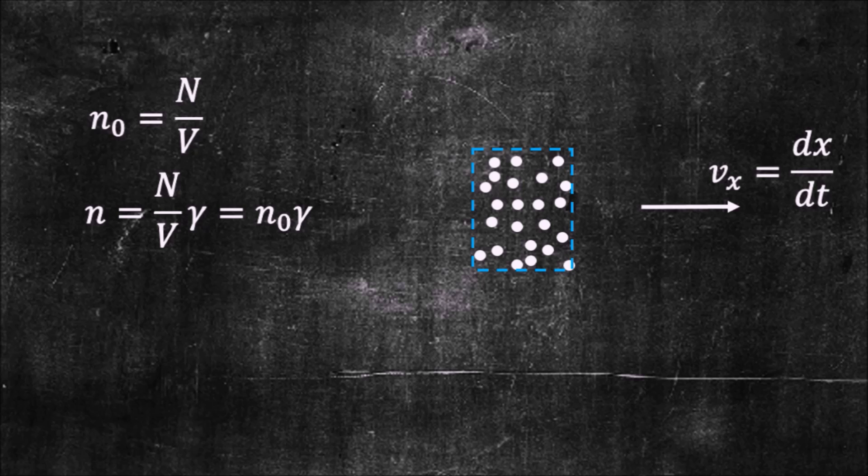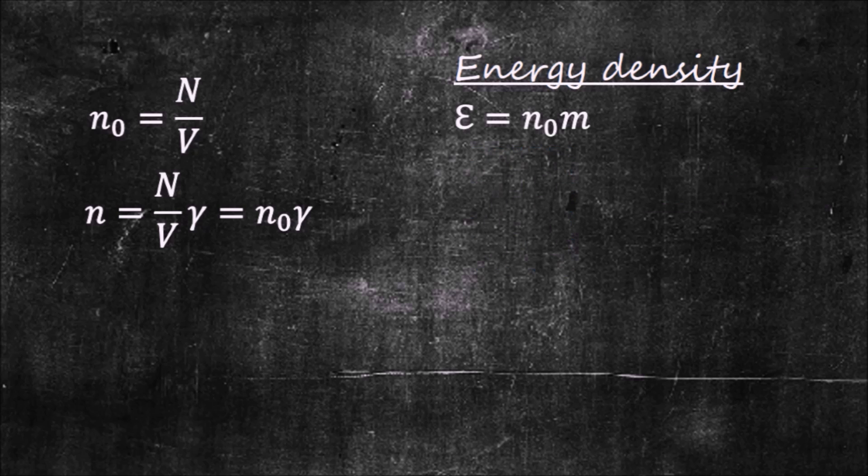What would be the energy density of the system? If the particles are stationary, only their mass will contribute. If they are moving along the x-direction, we get one factor of gamma due to the volume contraction, and one more due to the increase of the mass. But since gamma is equivalent to U^0, we can write the energy density like this.